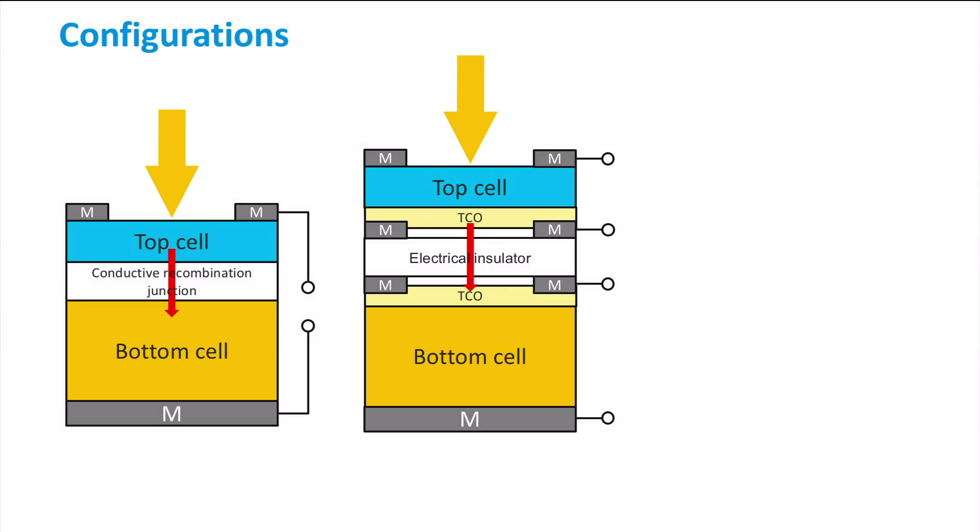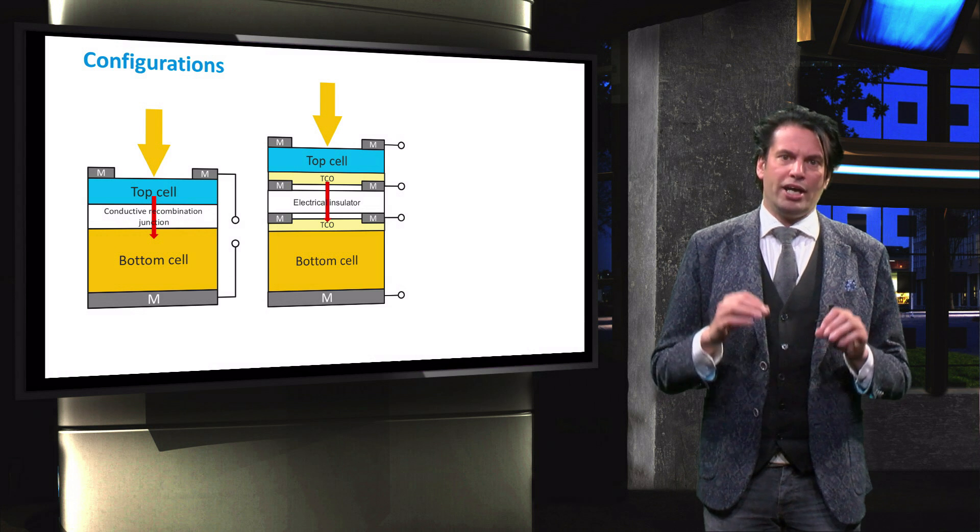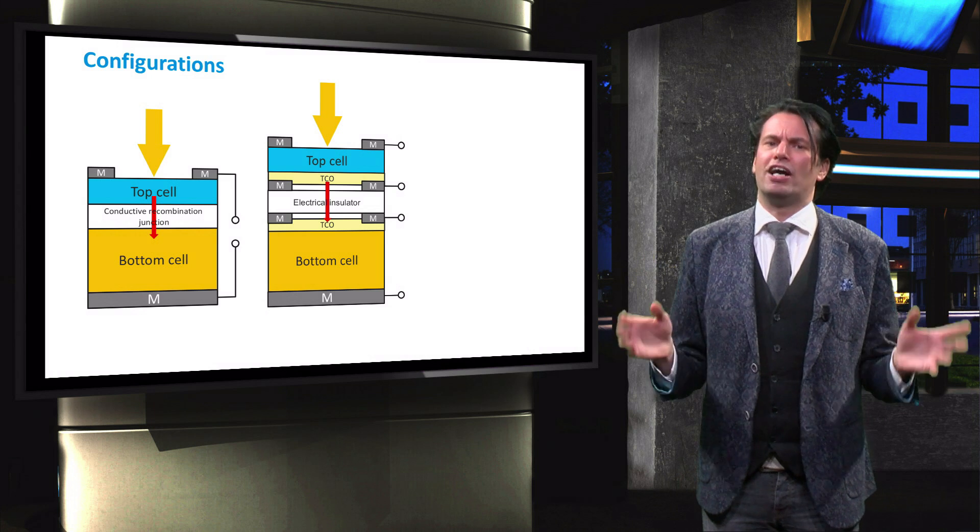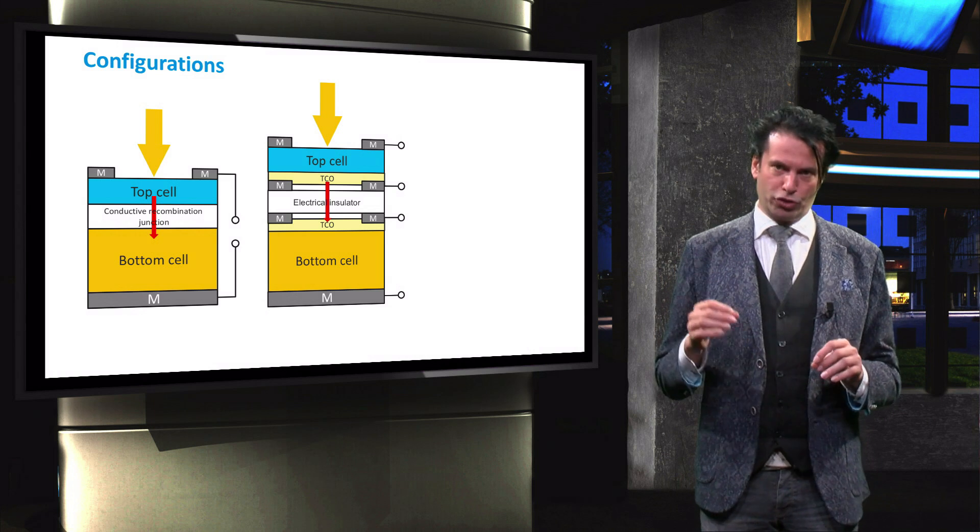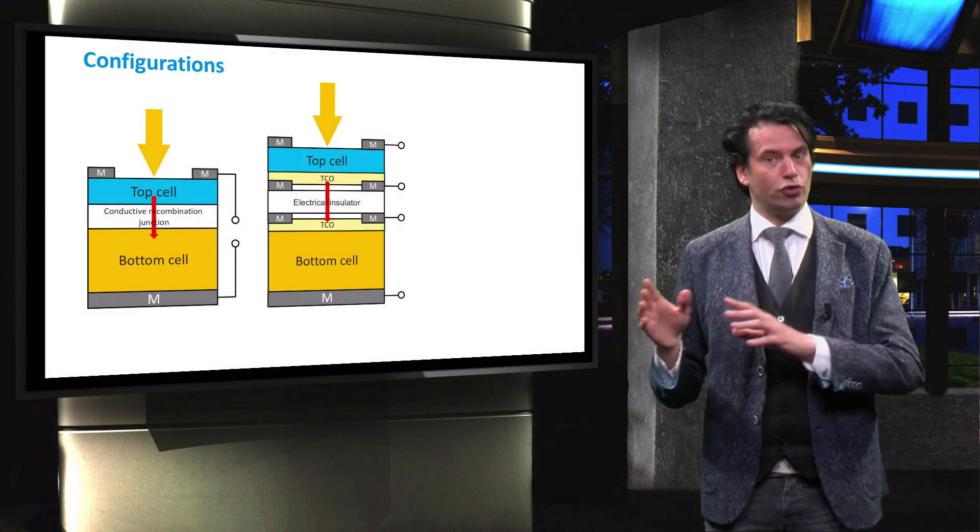If the cells in a four terminal device are not electrically insulated, the electrons generated in the bottom cell can recombine with the holes of the top cell, which is detrimental to the working mechanisms of the device. In addition, the four terminal device requires two terminals for the top cell and two terminals for the bottom cell.